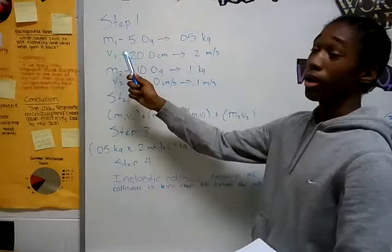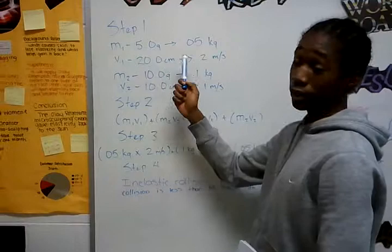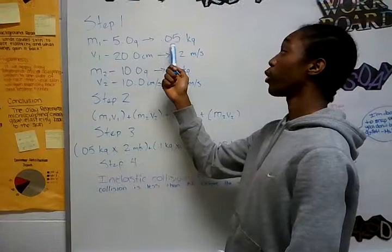Find the unknowns. Step 1: M stands for mass, V is for velocity. 5 grams, but you have to translate those to kilograms because you use those in the equation. So it would be 0.05 kilograms.